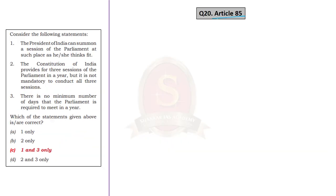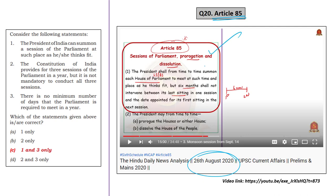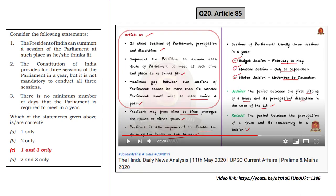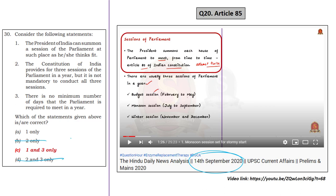This question is based on Article 85 of the Indian Constitution. We discussed this article on 26th August 2020, 11th May 2020, and 14th September 2020 in the News Analysis. Based on those explanations, we can easily say that the second statement is incorrect and the first statement is correct. By this we can eliminate options B and D and arrive at 50% probability of attempting the correct answer.